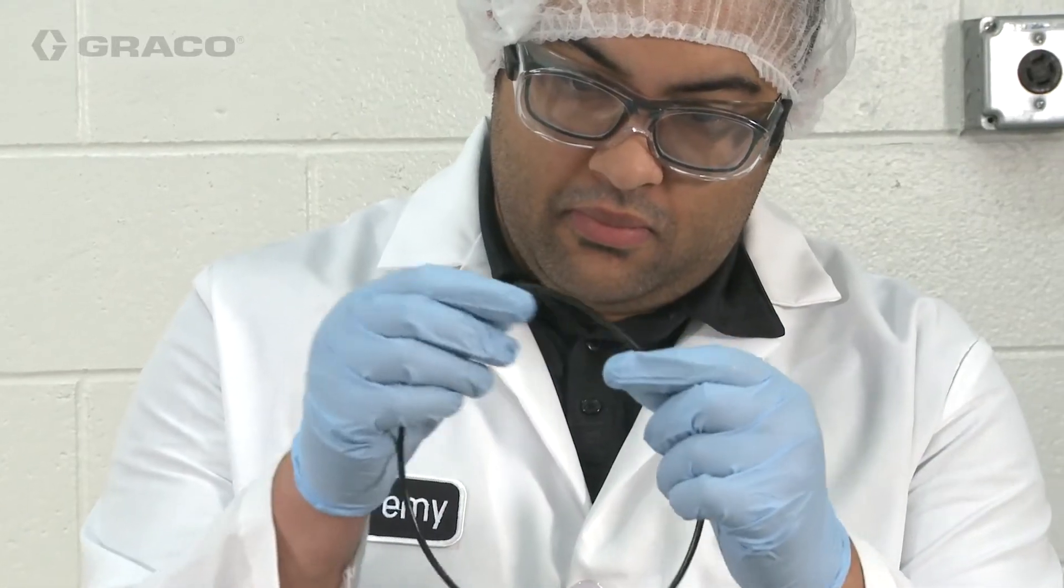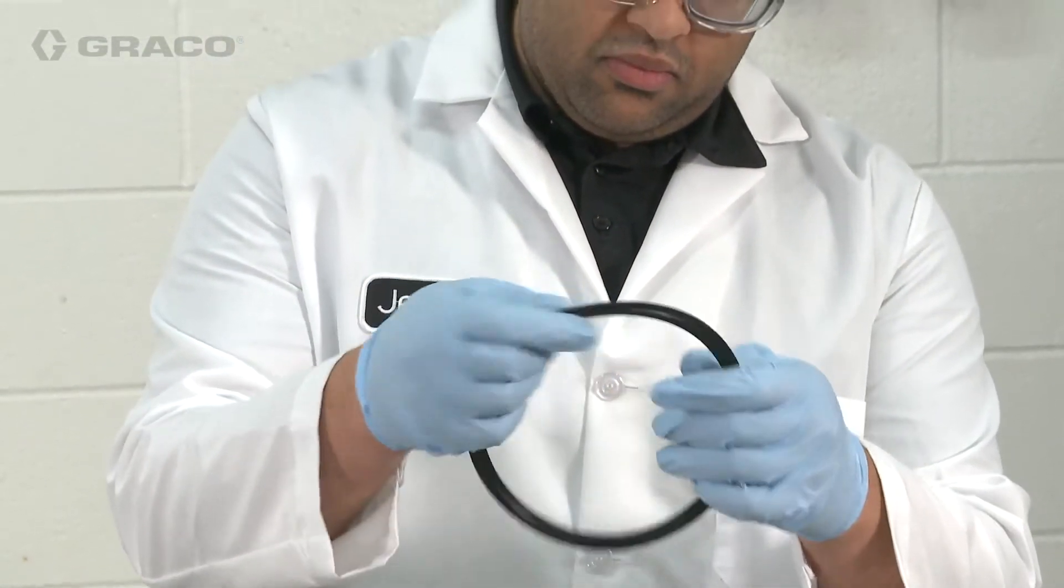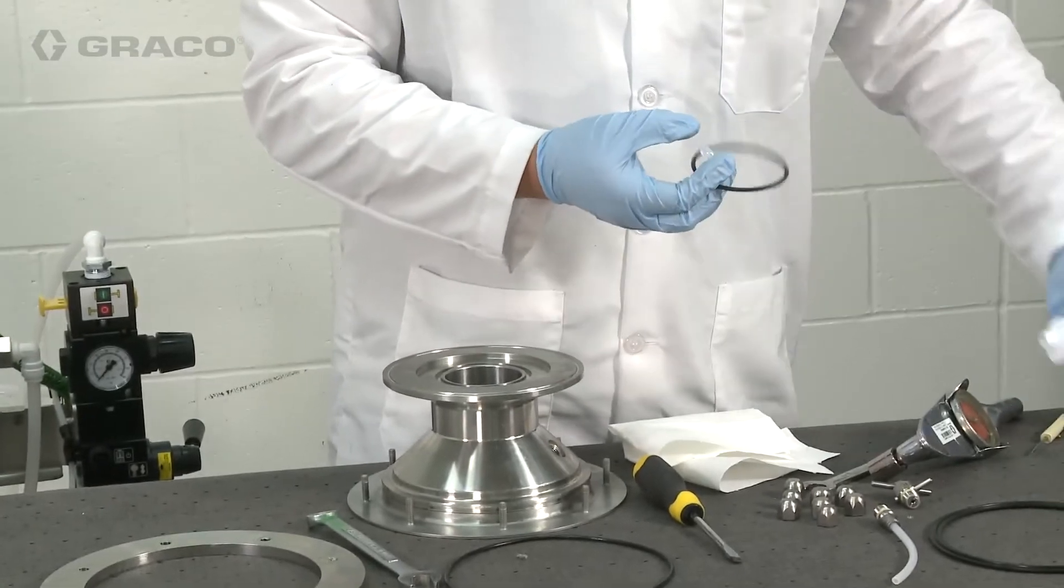Inspect seals for damage. Replace as necessary. Apply food-safe lubricant on seals during assembly.